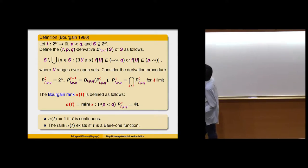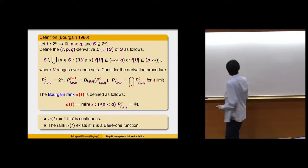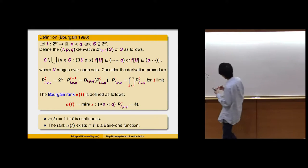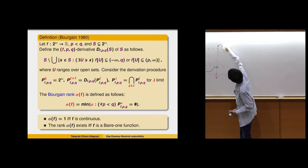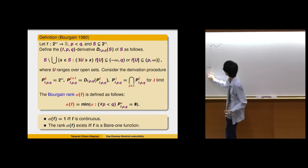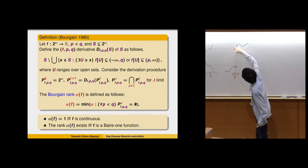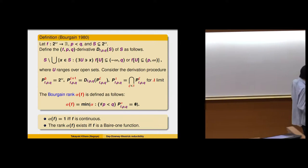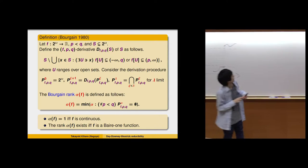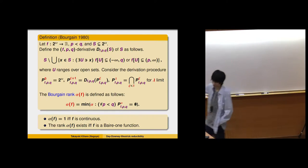In this way, we can define the notion of derivation for a given function and given rationals. We then iterate this derivation procedure starting from Cantor space. The successor level is just one derivation from the previous level, and the limit levels are defined by the intersection of the previous levels.